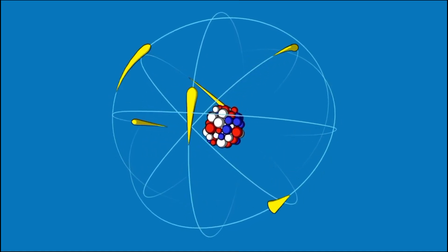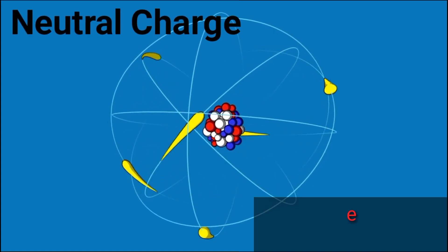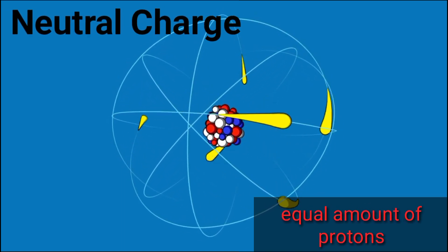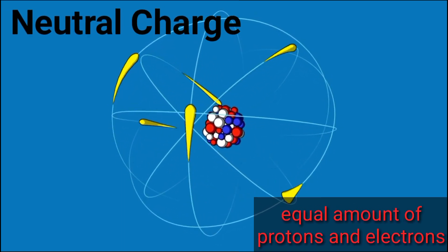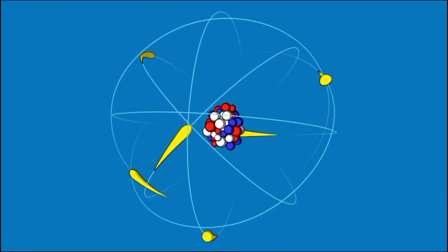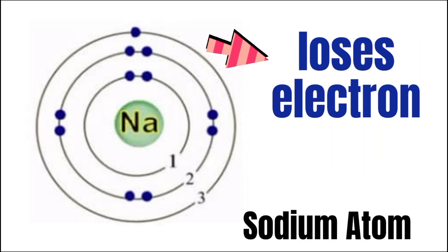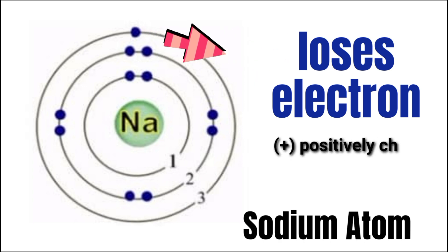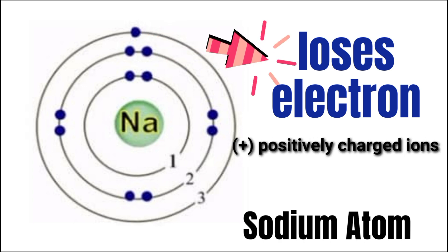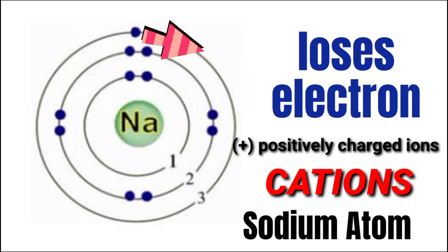All atoms have a neutral charge because they have an equal amount of protons and electrons. But when an atom loses one or more electrons, it becomes a positively charged ion, and this type of ion is called a cation.